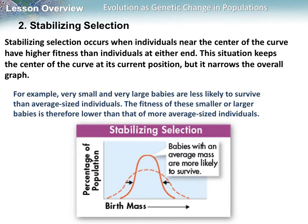In stabilizing selection, individuals near the center of the curve have higher fitness. It keeps the center of the curve at its current position but narrows the graph. For example, with baby size, initially there are a few very small babies, many average-sized babies, and a few very large babies. Very small and very large babies are less likely to survive, so over time we get fewer very small and very large babies, and more average-sized babies.